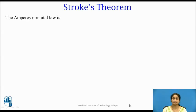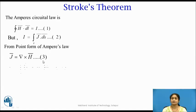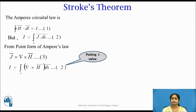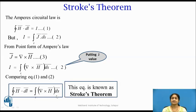Using the point form, we can state Stokes' Theorem. Recalling Ampere's Law: the closed integral of H·dL = I, and I = ∫J·dS. Since J̄ = ∇ × H̄, substituting gives I = ∫(∇ × H̄)·dS. Comparing both sides, the closed integral of H·dL equals the surface integral of (∇ × H̄)·dS, which is the statement of Stokes' Theorem.